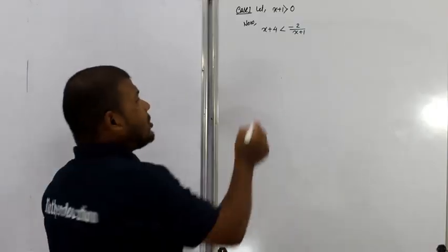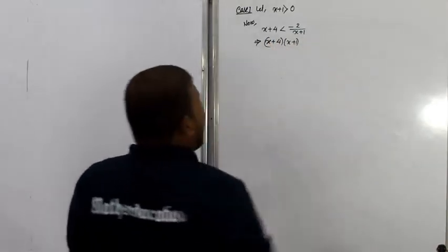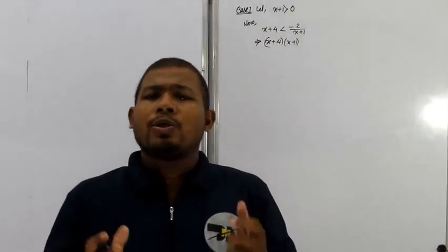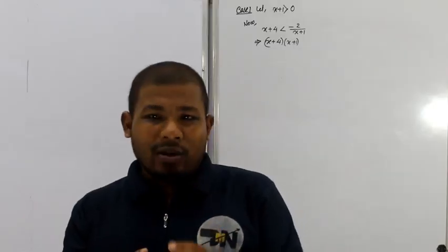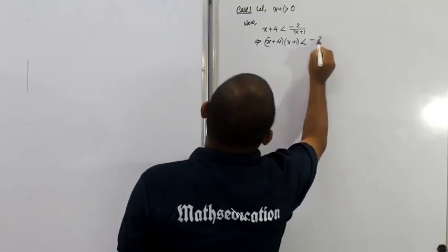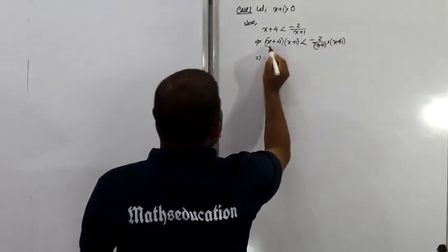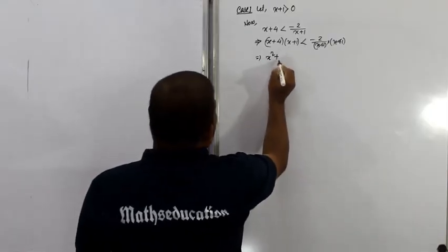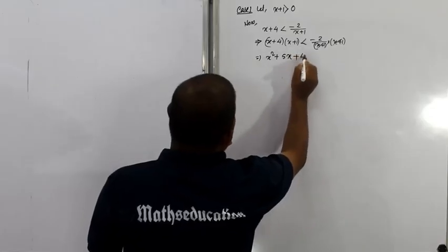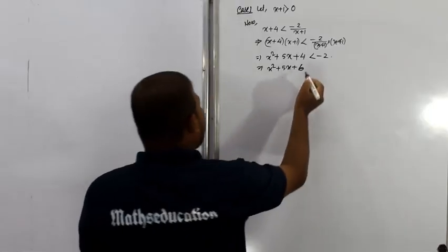Multiplying both sides by x plus 1 — since x plus 1 is positive, the inequality sign stays the same. We expand: x plus 4 times x plus 1 gives x squared plus a plus b into x, that is x squared plus 5x plus 4 plus 1, which is x squared plus 5x plus 4, and this is less than minus 2. Finally, x squared plus 5x plus 6 is less than 0.